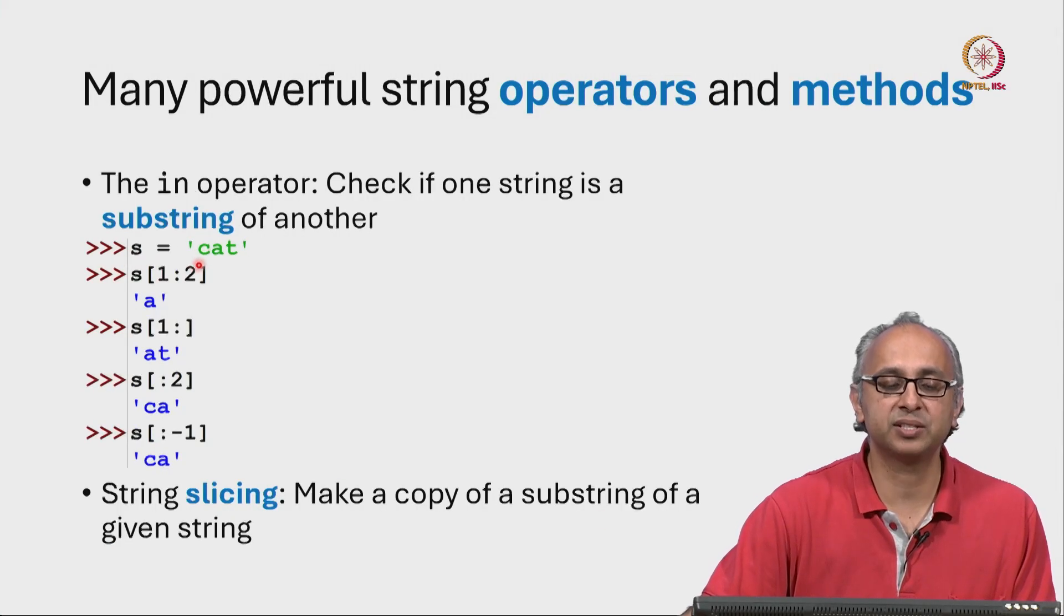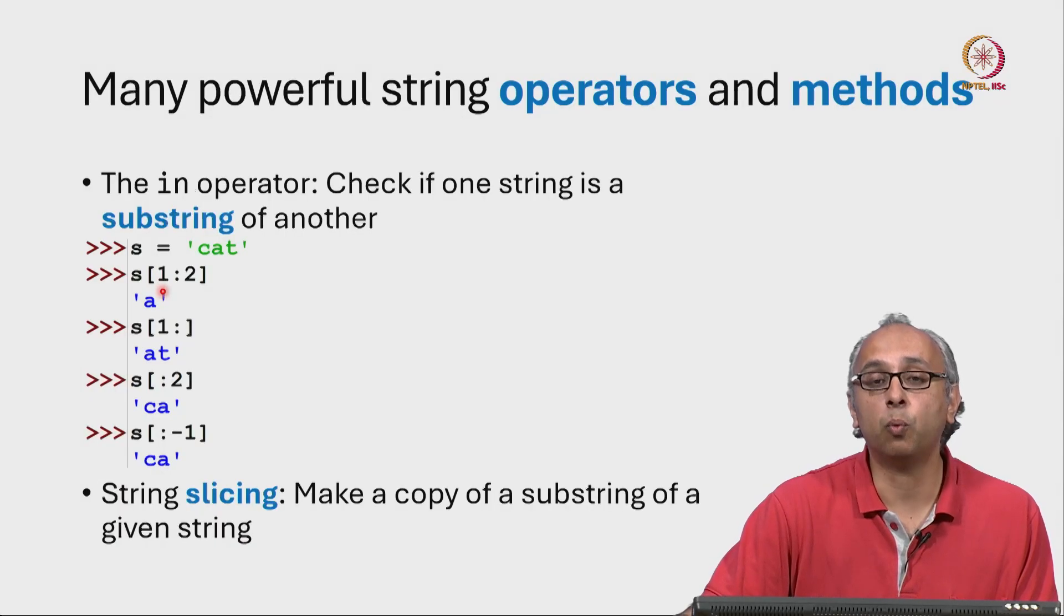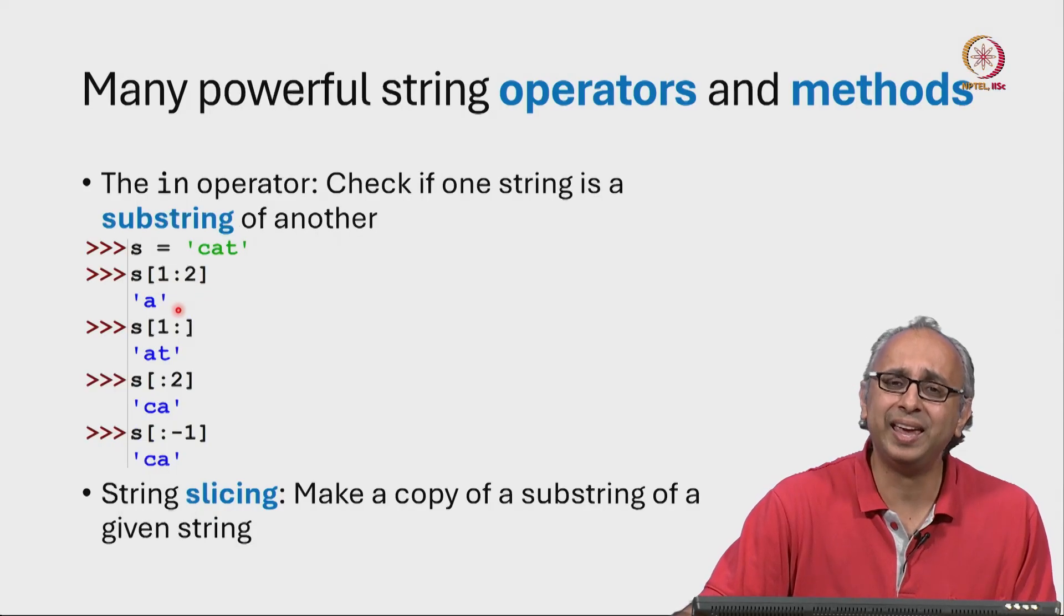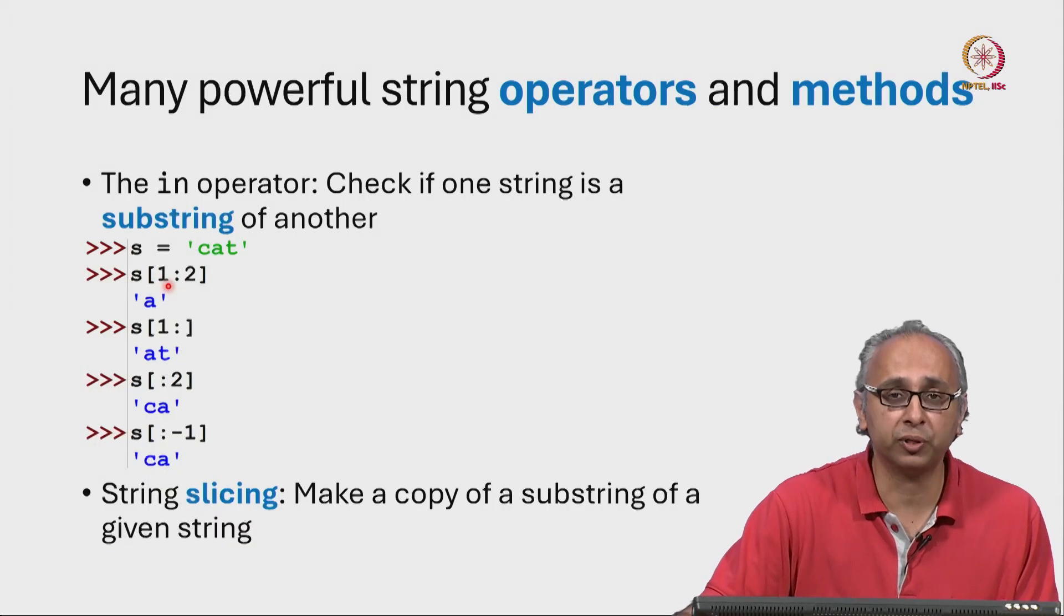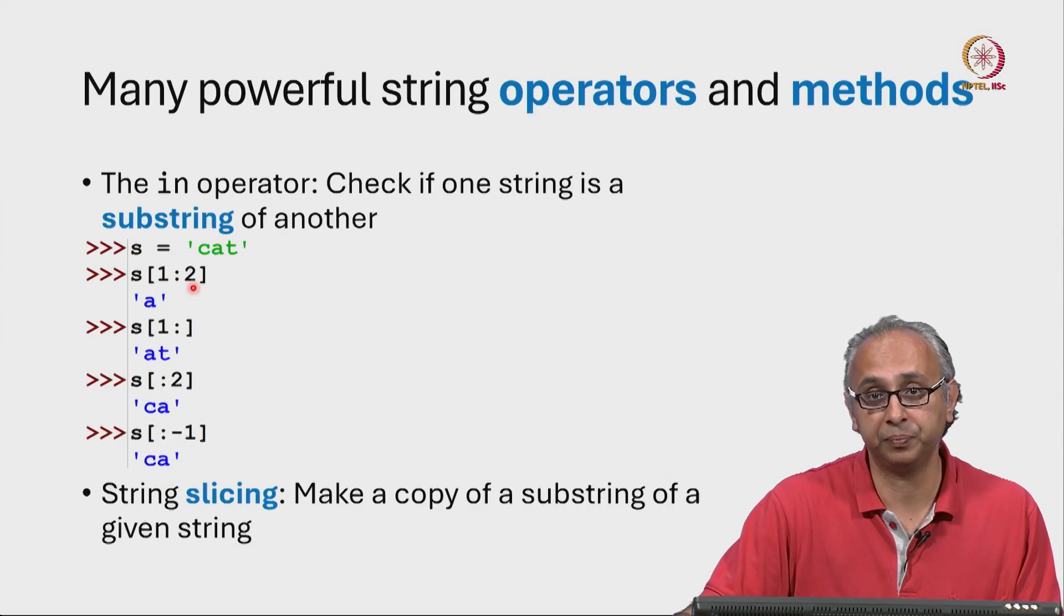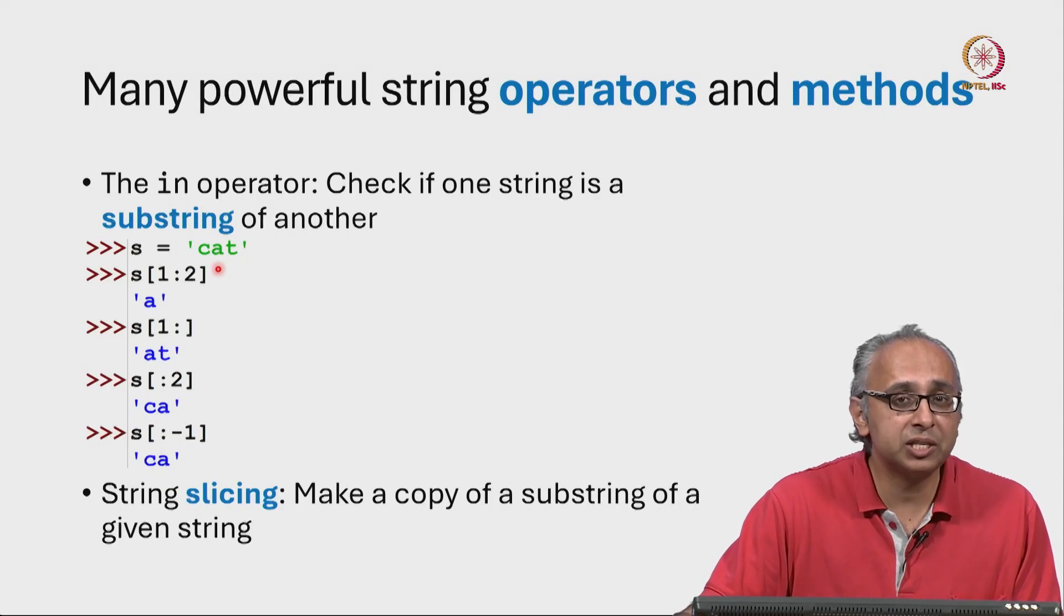So in the REPL, I have initialized S to 'cat'. Now remember the 0th letter is C, the 1st letter is A and the 2nd letter is T. So now I ask what is the slice of S starting at 1 up to 2 and it just tells me A. Starting at 1, I can see that's A but 2 is T. So why did this slice not give me A T? Well, this syntax 1 colon 2 is read like this. We start at this index before the colon and we go up to but not including the number after the colon. So we start at index 1 which is A and we go up to but not including the letter at index 2. So the slice only consists of the letter at index 1 which is just A.